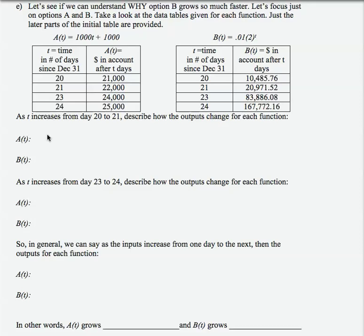So continuing our work from the dollars and cents data, let's see if we can understand why option B grows so much faster. The data tables have been severely reduced with just a couple of values in them, so let's analyze what happens as t increases from day 20 to day 21. So notice that is an increase of one unit in input. Describe how the outputs change for each function.